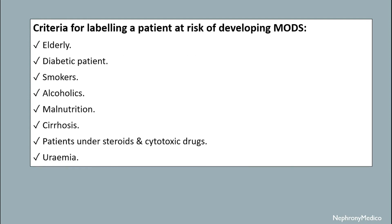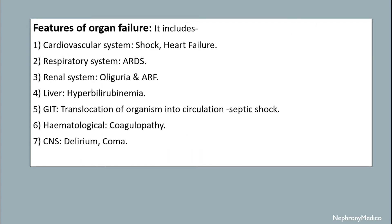Criteria for labeling a patient at risk of developing MODS include: elderly diabetic patients, smokers, alcoholics, malnutrition, cirrhosis, patients under steroids and cytotoxic drugs, and uremia.